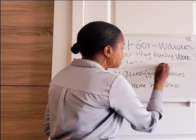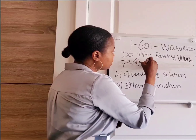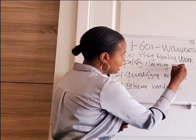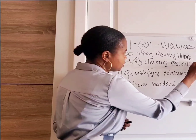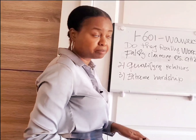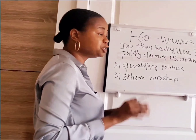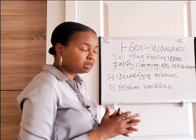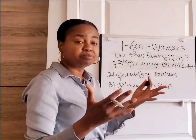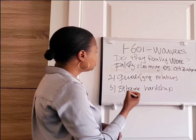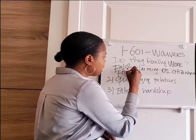Number one is falsely claiming U.S. citizenship. Once you falsely claim U.S. citizenship on your application and you do not retract it on time — in other words, you do not fight the claim and the decision becomes final — you cannot waive it.